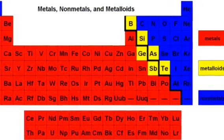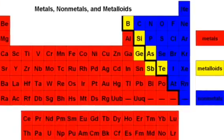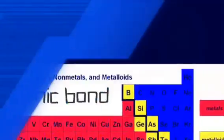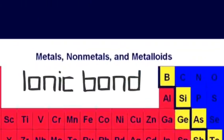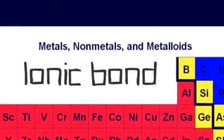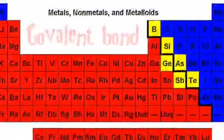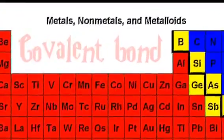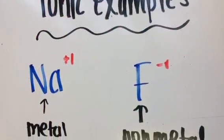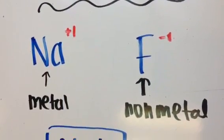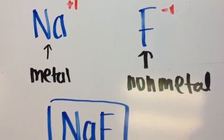The periodic table of elements is made up of metals, metalloids, and nonmetals. There are ionic bonds and then there are covalent bonds. An ionic bond is made between a metal and a nonmetal. For example, sodium and fluorine, which is a metal and a nonmetal — sodium fluoride.